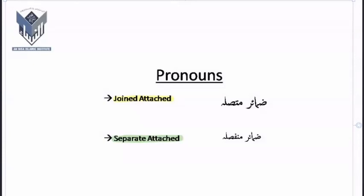I saw Maryam. Maryam was sitting — no, she was sitting. So 'she,' which is used instead of Maryam, is a pronoun. Similarly, I saw Ahmad and Maryam — so 'they' is a pronoun. 'I' is also a pronoun. So there are pronouns in English and in all languages, including Arabic.